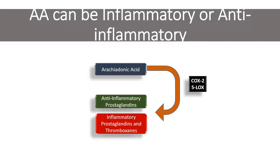But remember from the previous slide: omega-6 fatty acid arachidonic acid can also produce anti-inflammatory prostaglandins. There's a branch point where we can produce either anti-inflammatory or inflammatory signaling molecules, and we don't yet know enough about the regulation of that pathway. It's possible that in some individuals, omega-6 fatty acids primarily trigger the anti-inflammatory pathway, meaning they won't necessarily get increased inflammation from a high omega-6 to omega-3 ratio. We need more research to understand what's going on.